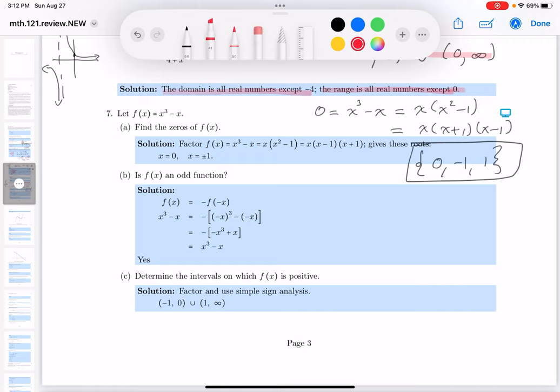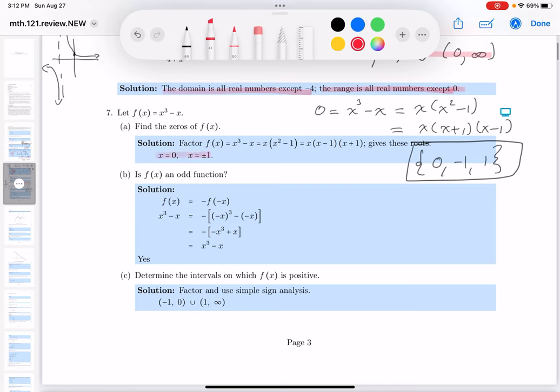Look at the key. See if they're saying that. They say zero plus or minus one. We got that. Let's do the next one. It says, is f of x an odd function?